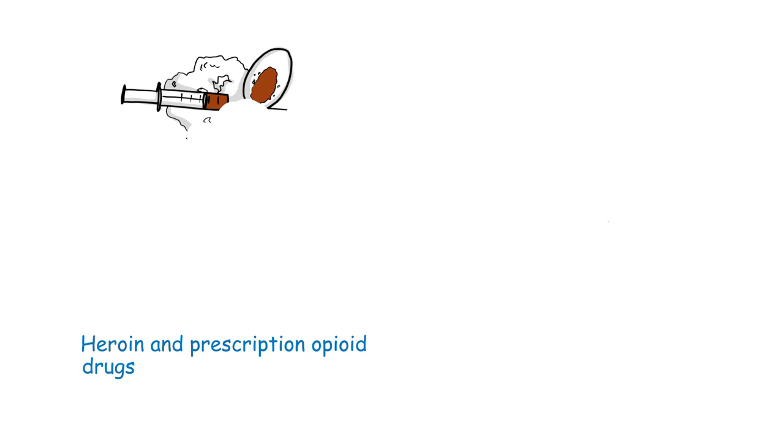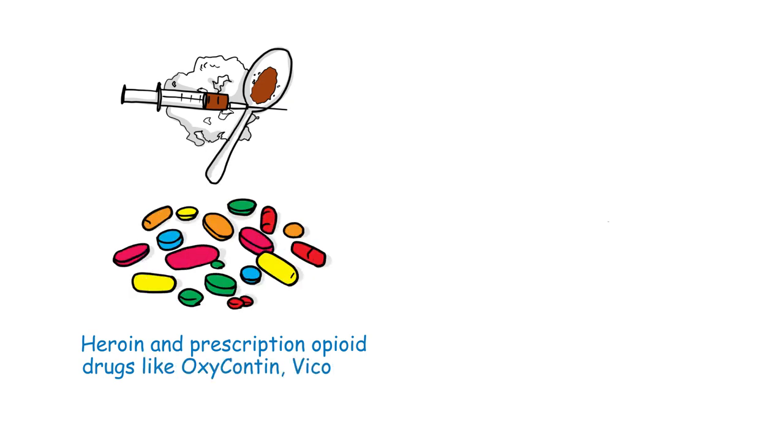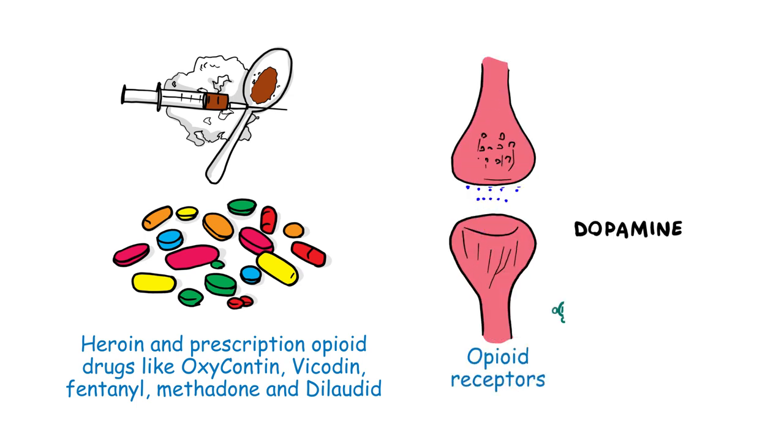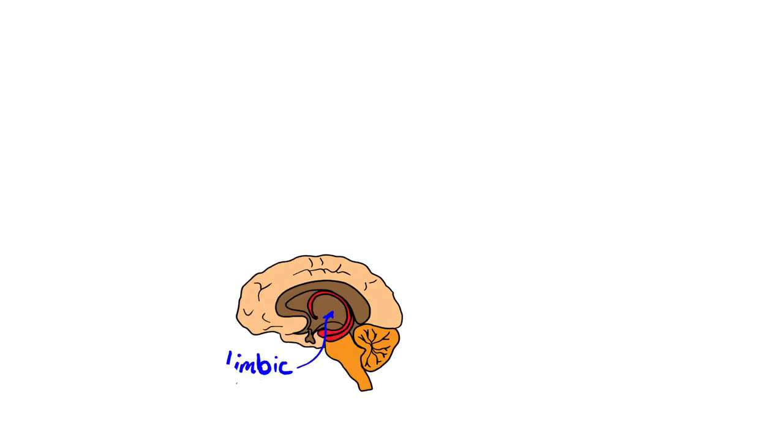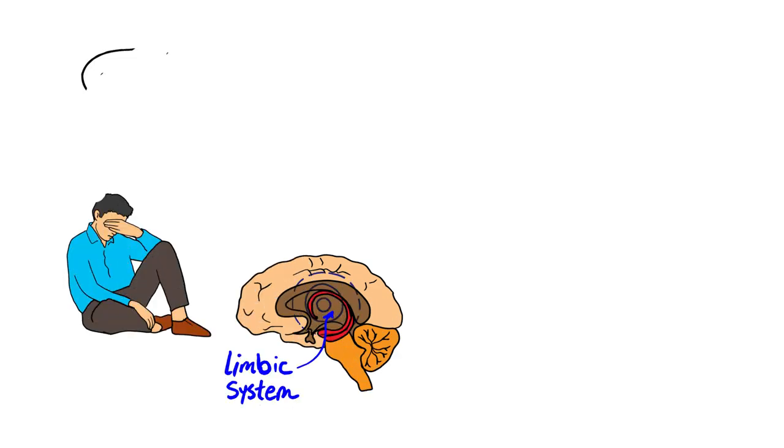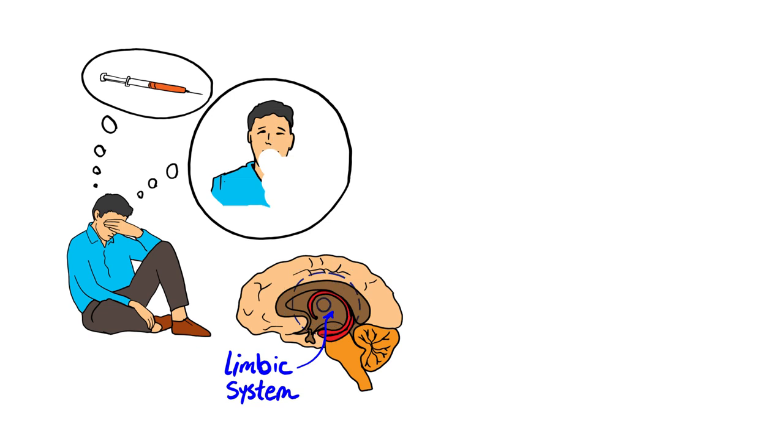Heroin and prescription opioid drugs like OxyContin, Vicodin, Fentanyl, Methadone, and Dilaudid bind to opioid receptors in the brain and trigger the release of dopamine. In a sense, these drugs hijack the limbic system in the brain, inducing a powerful high that individuals are often keen to recreate, leading to reinforcing behaviors.